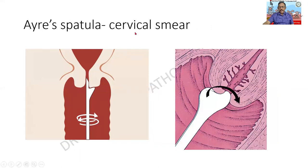Another region where cytology is useful is the female genital tract. It consists of the vagina, the cervix, and the lip of the cervix, from which samples can be obtained. Look at the shape of this particular instrument — this is called the Ayre spatula. It is attached at the site of the lip of the cervix and moved in a clock-like motion so that samples of cells are all collected. In a spinning motion, samples from the ectocervix and the endocervix are obtained and smears are made.